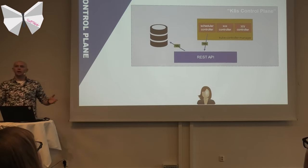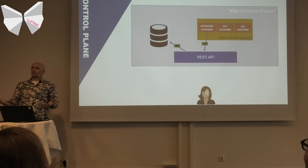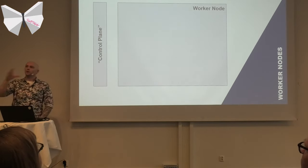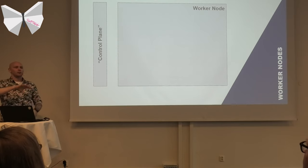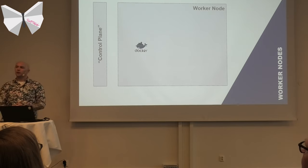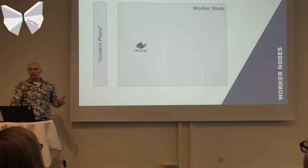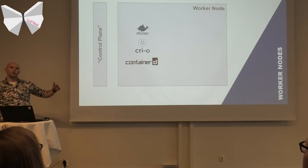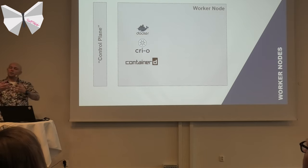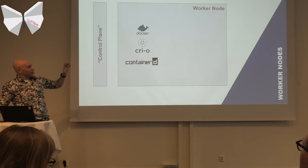That's what the master nodes do — if you don't have any worker nodes, you just have stuff in the database and a REST API on top of it. On the worker nodes, you have a container runtime — usually Docker, but it doesn't need to be. You can use CRI-O, Containerd, or Rocket, because the runtime system is standardized. Containerd is actually part of Docker as well — Docker is just Containerd with other stuff on top.